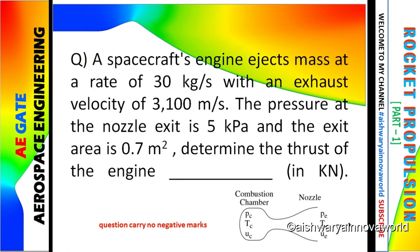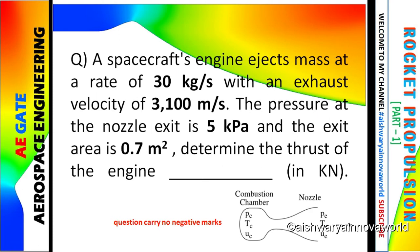Now I will go for the problems. First focus on the first problem. A spacecraft engine ejects mass at a rate of 30 kg per second with an exhaust velocity of 3100 meter per second. The pressure at the nozzle exit is 5 kPa and the exit area is 0.7 m2. Determine the thrust of the engine in kN. This question carries 2 marks and since there is no option there is no negative mark. Now what things have been given in this problem: mass flow rate M dot, exhaust velocity VE, pressure at nozzle exit PE, exit area AE. And what you have to find is thrust of engine T in terms of kN.